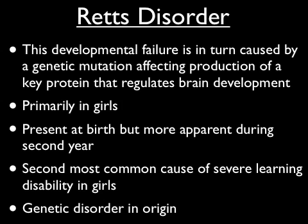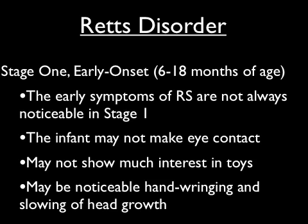Rett's disorder is generally caused by a genetic mutation and is predominantly found in girls. You'll see most of the characteristics really take place during the second year. It's the most common cause of severe learning disability in girls and is genetic in origin. There are four general stages. In stage one, the early symptoms are not really noticeable — you'll see general development in the child. They may not make eye contact, but they may. The child may seem to be developing normally, with not much interest in toys, slow handwriting, and slow head growth, which is one of the key indicators.